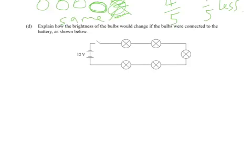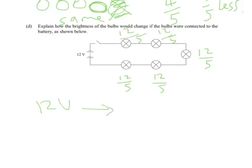Part D: Explain how the brightness of the bulbs would change if the bulbs were connected to the battery as shown below. So in this case we've got 12 divided by 5 over each of these lamps. So instead of having 12 volts across, you end up with your voltage changing to 2.4 volts. So you end up with 2.4 volts across each.